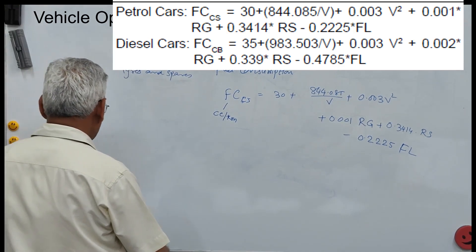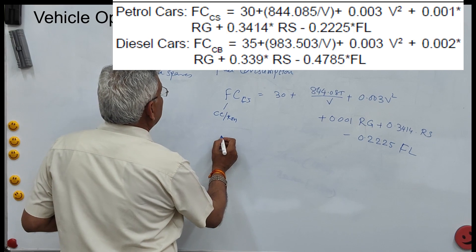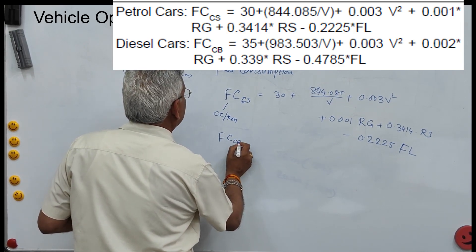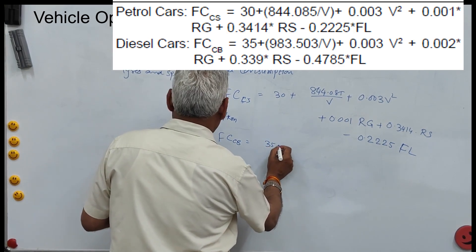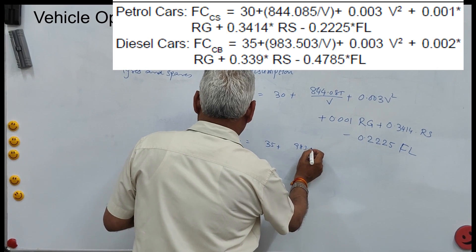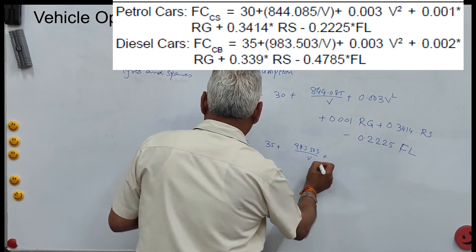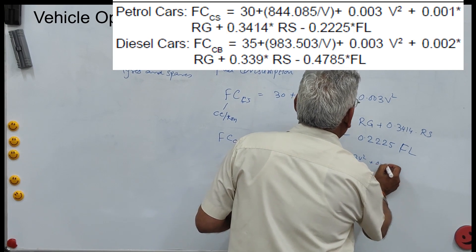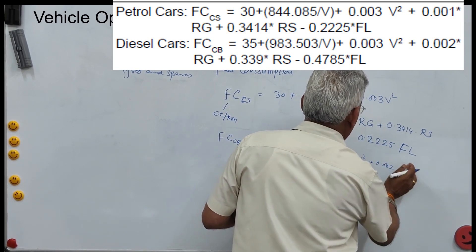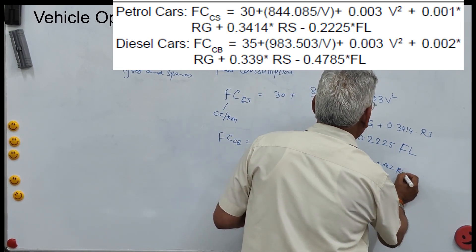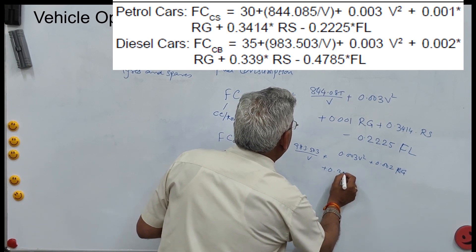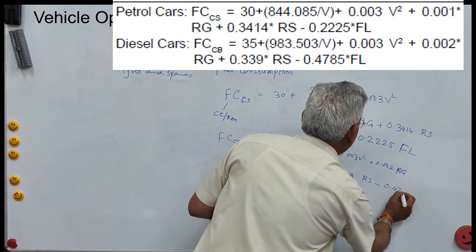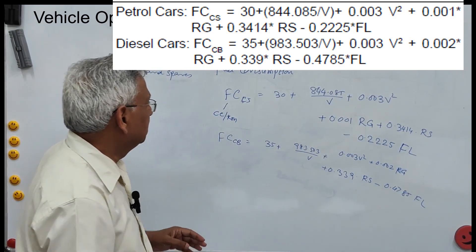A similar equation is given for a big car as well. This is for a petrol car, and another equation is given for a diesel big car Cb: 35 + 983.503/V + 0.03V² + 0.002·Rg + 0.339·Rs − 0.4785·FL.